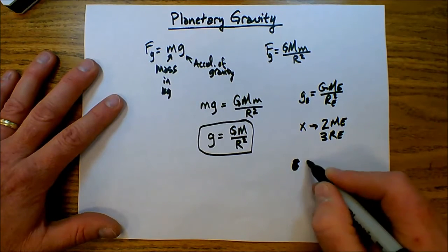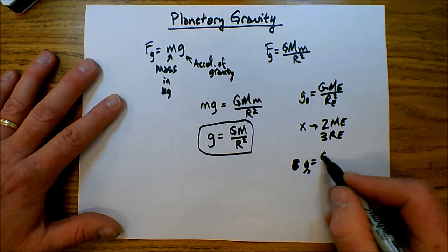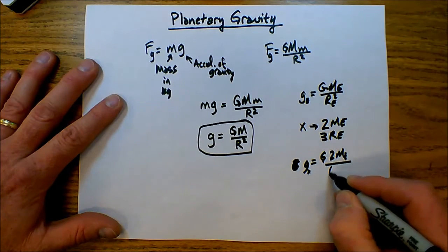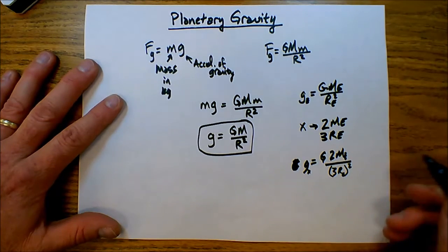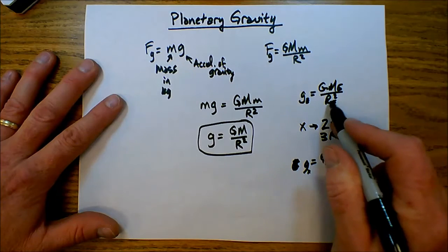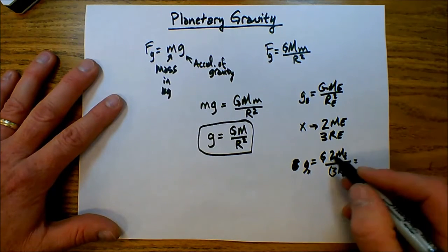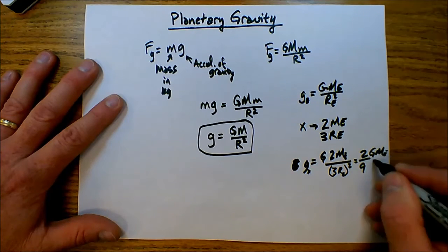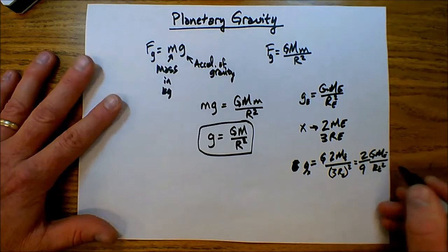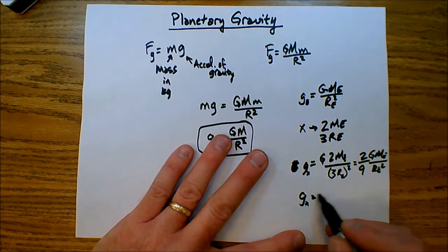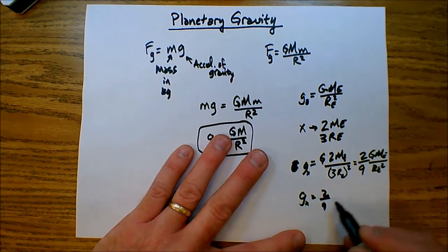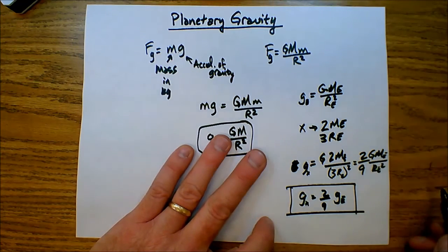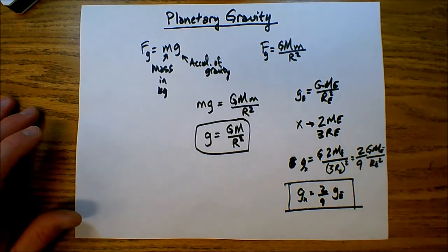Little g on planet X equals big G double the mass over triple the radius squared. Notice that the distance of the radius is being squared. So this has the effect of becoming 2 on top and 9 on the bottom, leaving me then G mass of the Earth over radius of the Earth squared. In other words, the acceleration of gravity on planet X is going to be 2 ninths of the acceleration of gravity on the planet Earth.